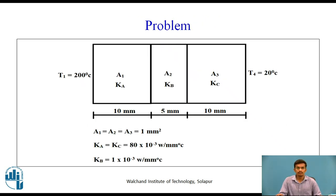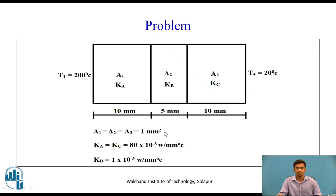We will solve this simple problem in APDL. We are considering 3 walls of length 10 mm, 5 mm, and 10 mm. The inner temperature of the wall is T1, that is 200 degrees Celsius, and the outer temperature is T4, that is 20 degrees Celsius. The area is considered uniform at 1 mm square, and other thermal properties are given.